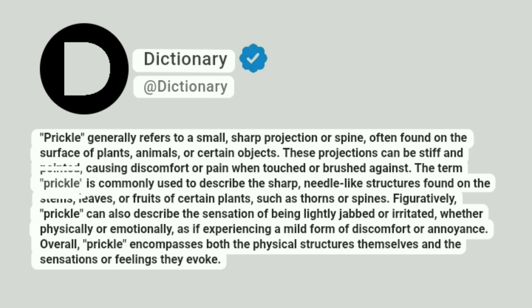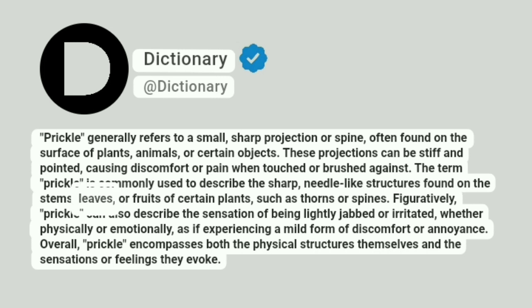The term prickle is commonly used to describe the sharp, needle-like structures found on the stems, leaves, or fruits of certain plants, such as thorns or spines.